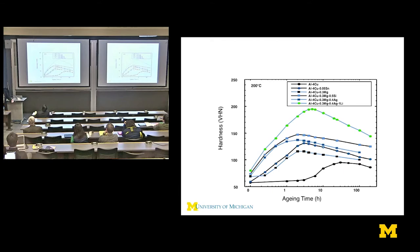If you are a metallurgist, you know about this curve — the age hardening curve. If you've taught MSE 220 or 250, you know about it. Hardness versus aging time: we see the peak aging phenomena, over-aging, et cetera. It's a very important strengthening mechanism in metals. So we have this curve here for aluminum-copper, and then we add various alloying elements.